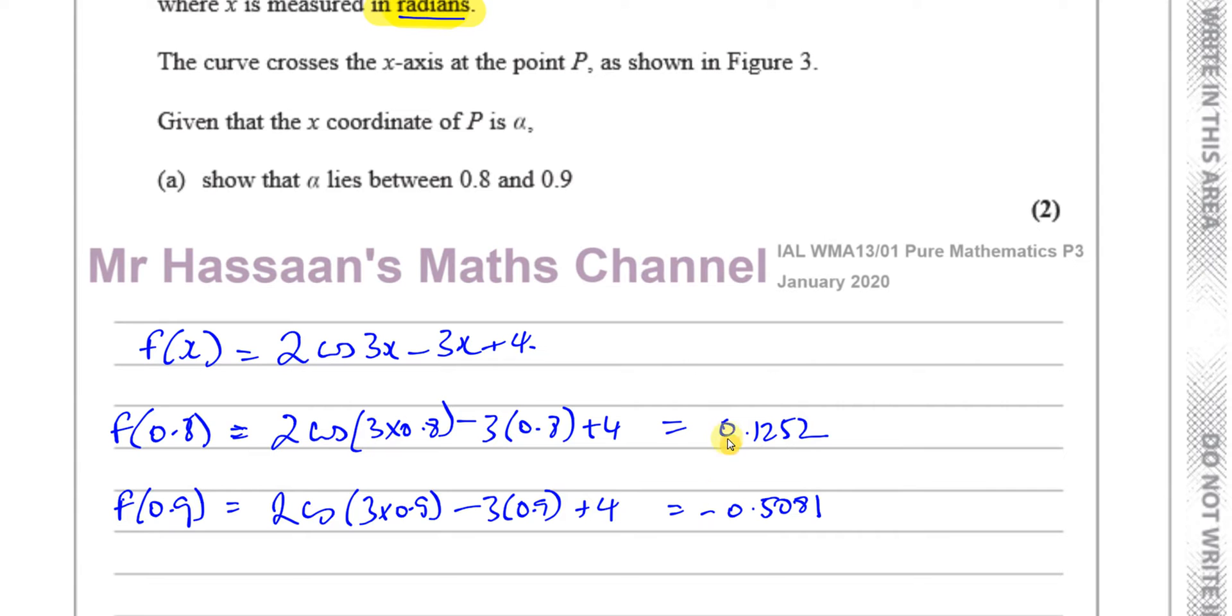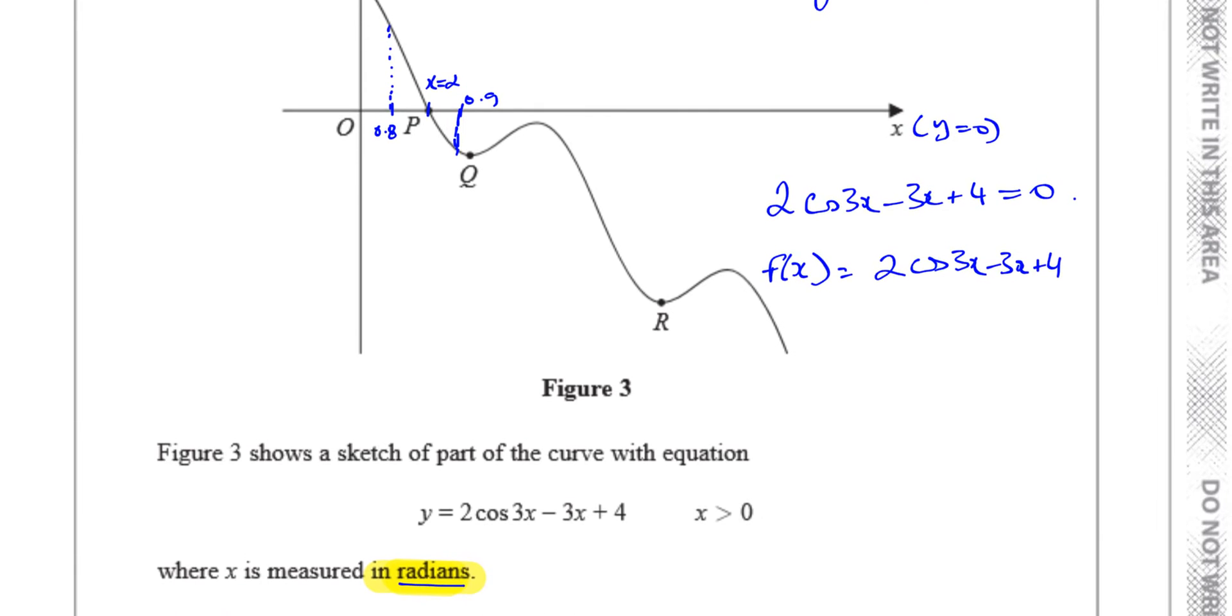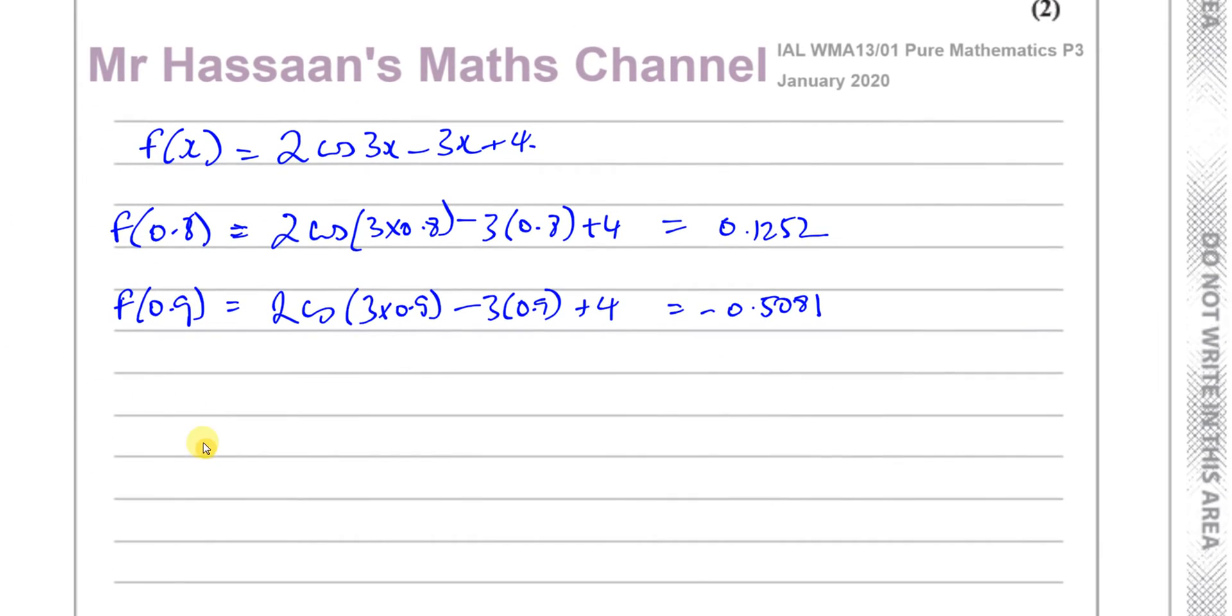So I see I have a change in sign. As we deduce from the diagram, 0.8 will give us a positive value of y, and 0.9 will give a negative value of y. So we can say, therefore, as f of x is a continuous function, this is a complete answer, continuous. I mean, it doesn't have any breaks, and it's not got an asymptote.